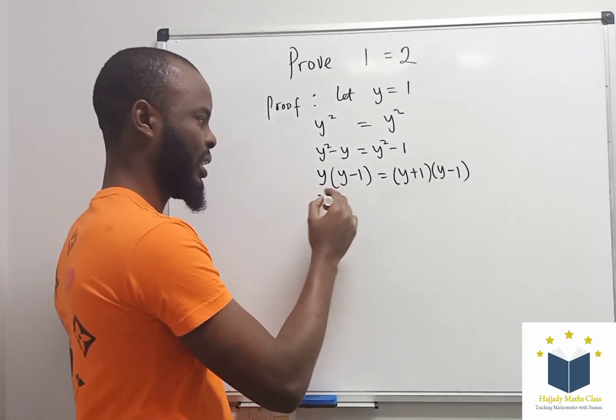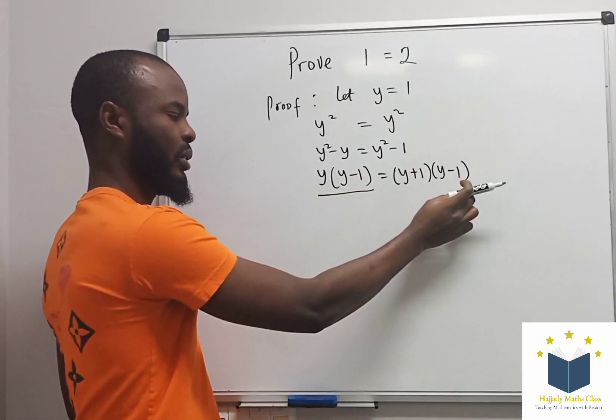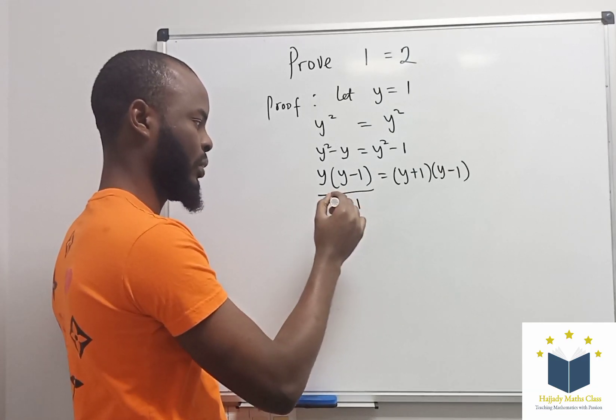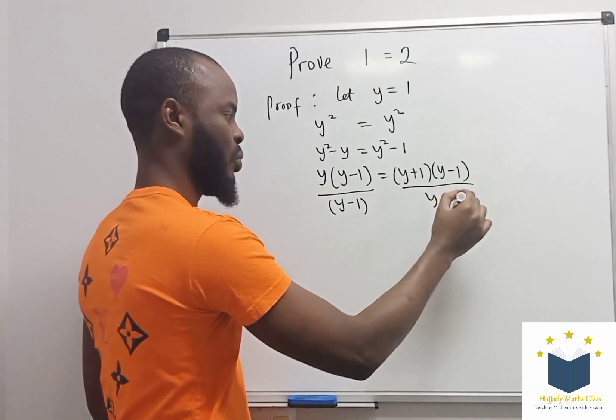Now looking at this, you can divide both sides by what is common, which is (y - 1).